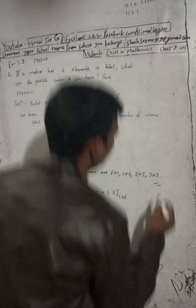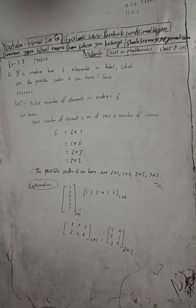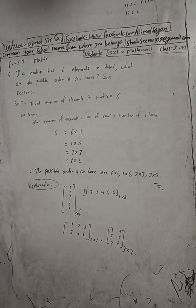So the solution is: the possible orders a matrix with 6 elements can have are 6×1, 1×6, 2×3, and 3×2.